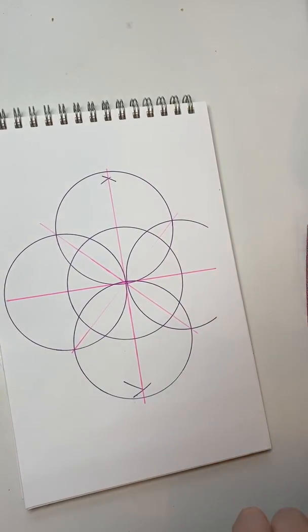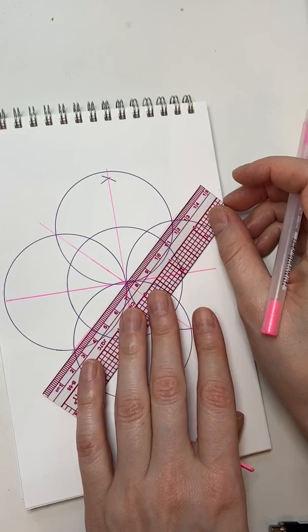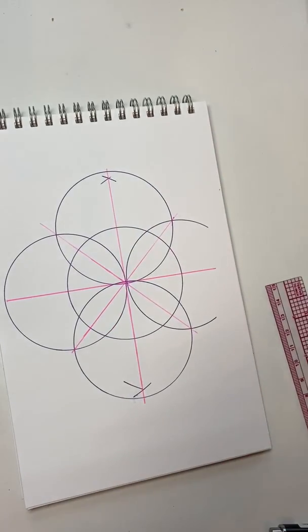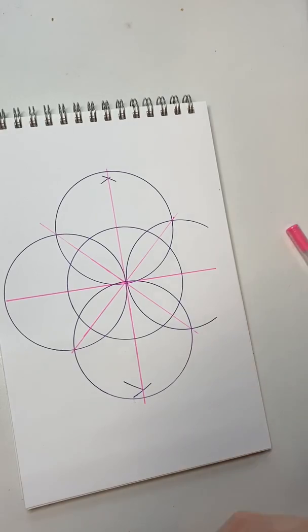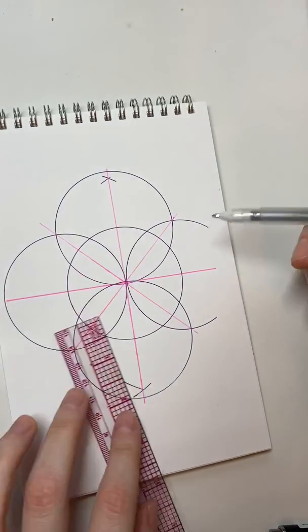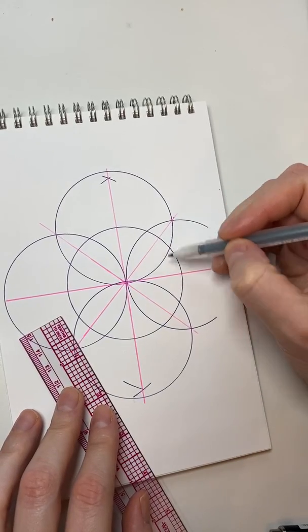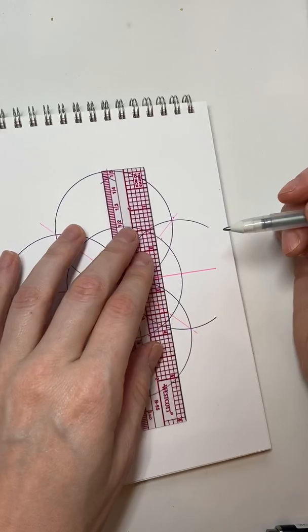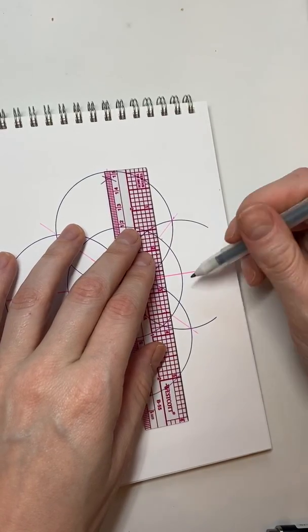And then the last thing that you need to do, really sorry you can't really see that last line that I drew, is you're going to draw two squares inside the original circle, keeping in mind the original circle is the one on the super inside. And what you're going to do is everywhere that a pink line intersects the purple circle, we're going to connect to make a square.